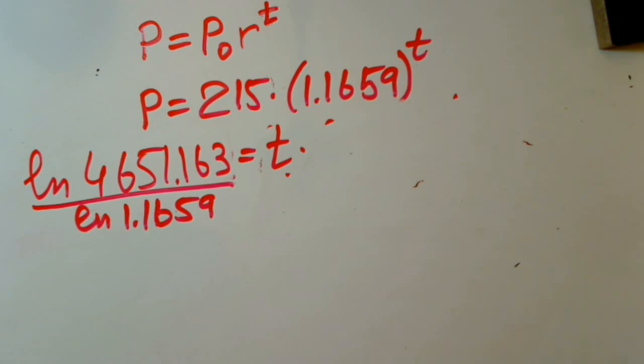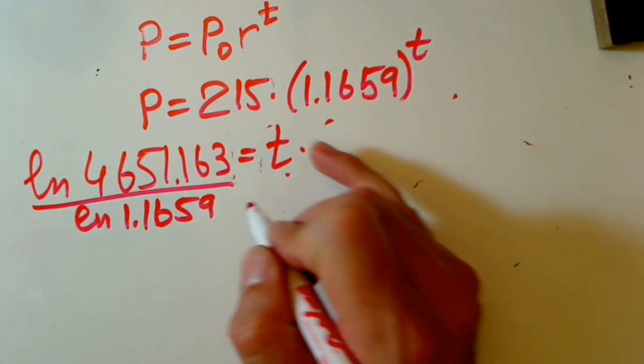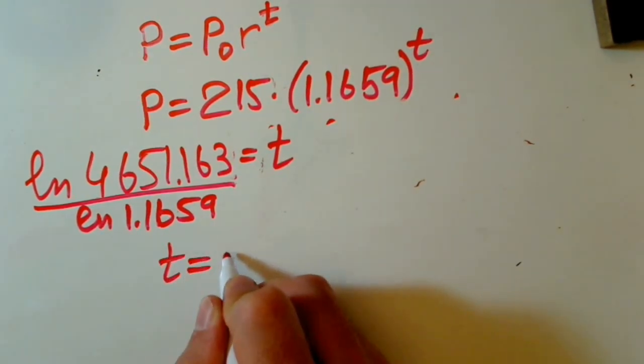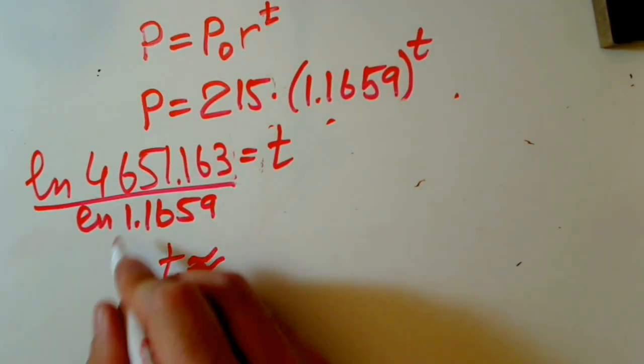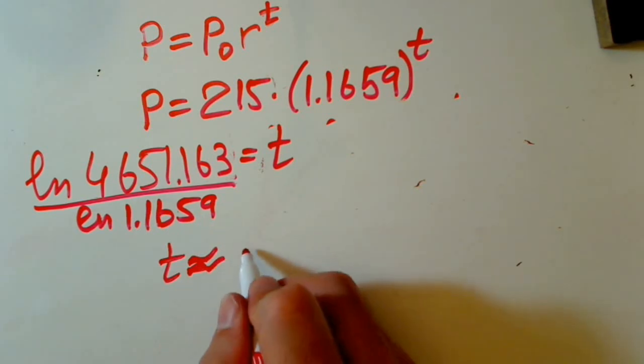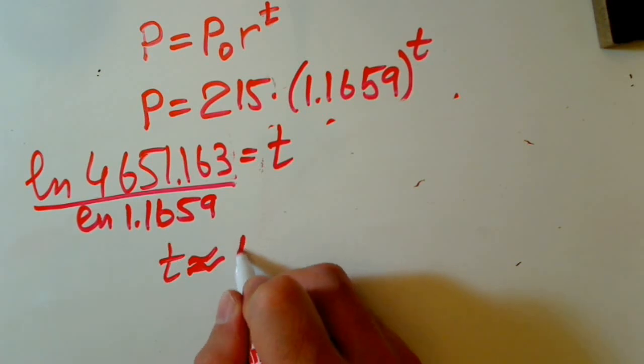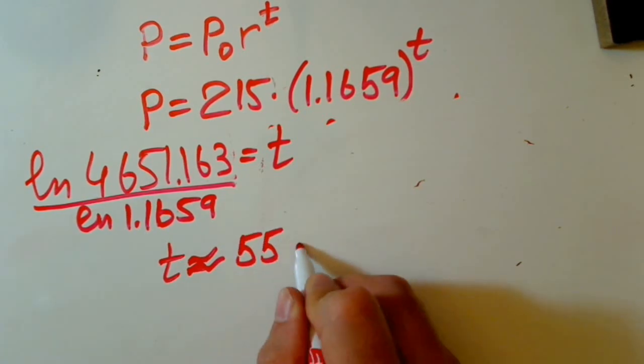And so, divide by natural log of 1.1659, and it's equals to approximately T equals to the approximation, because this is not exact. It will be a very long decimal place, it will be a long list of decimal places, and it's 55 minutes.